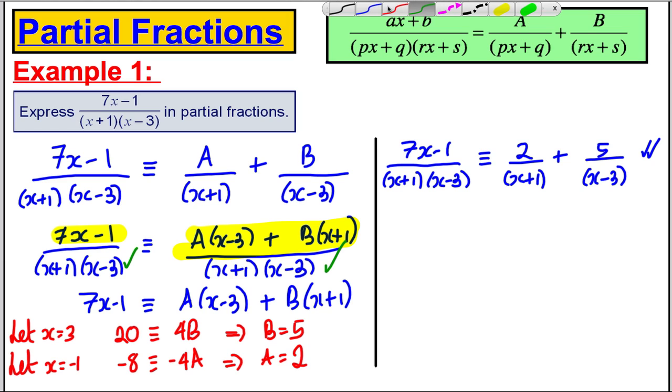One thing perhaps to point out when we're in the exam: we write down this as our initial statement - we know we're dealing with two distinct linear factors, the bottom's quadratic, the top's linear, we can use this rule. We probably don't need to write down this line here. We can probably jump straight from here to here - we know that if we need to make the denominator (x+1)(x-3), A needs to be multiplied by (x-3), B needs to be multiplied by (x+1), and that must be equal to 7x subtract 1. So we can probably skip a line which I'll do in the next example.